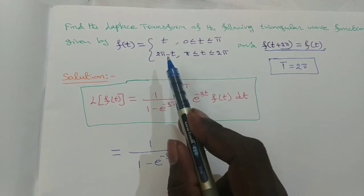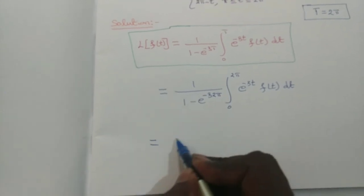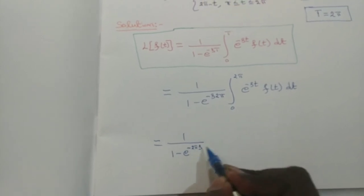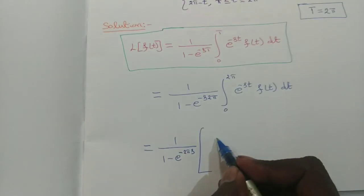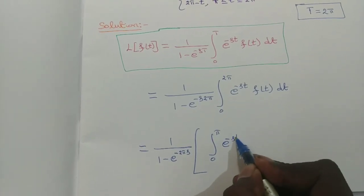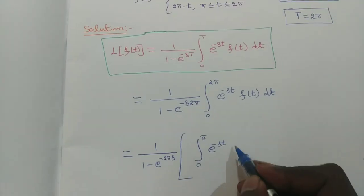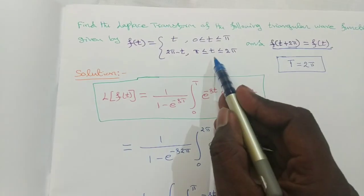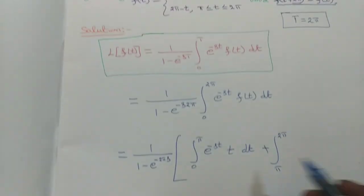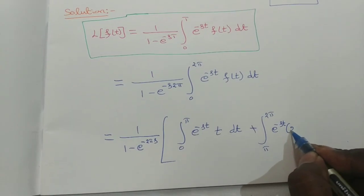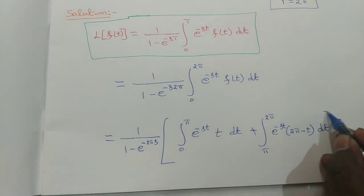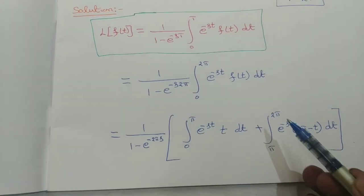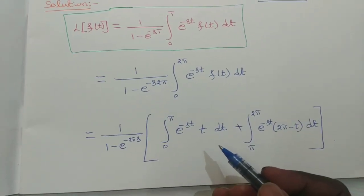In the interval π to 2π, f(t) = 2π − t. So the integral from 0 to 2π can be rewritten as: 1/(1 − e^(−2πs)) times [integral from 0 to π of e^(−st) · t dt plus integral from π to 2π of e^(−st) · (2π − t) dt].